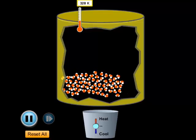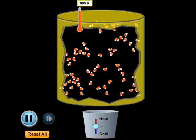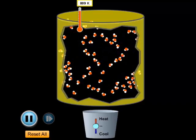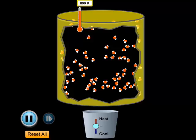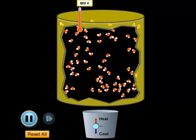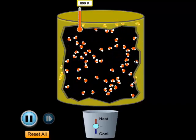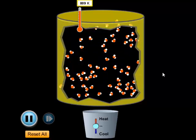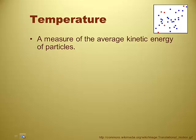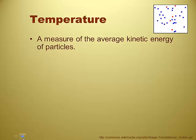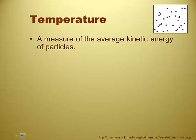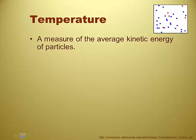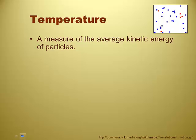If we hit the gas button, we get steam at 809 Kelvin — 536 degrees Celsius — very, very hot steam. As steam, the big difference is that the molecules are moving faster and they're also farther apart from each other, and when they hit each other they actually bounce. Temperature is a measure of the average kinetic energy of particles — the higher the temperature, the faster they're moving. Some of those molecules are moving faster than others, so it's the average.